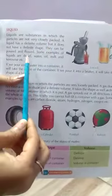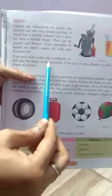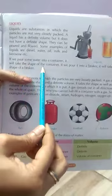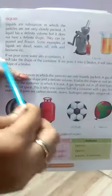Some examples of liquids are diesel, water, oil, milk and kerosene. If we pour some water into a container it will take the shape of the container. If we pour it into a beaker it will take the shape of a beaker.